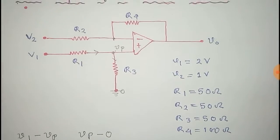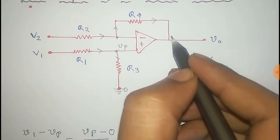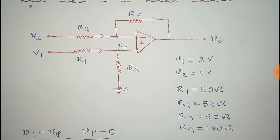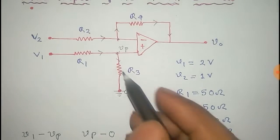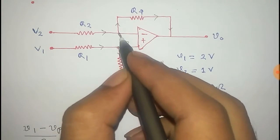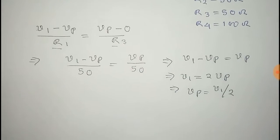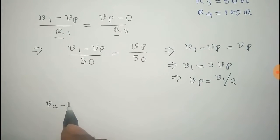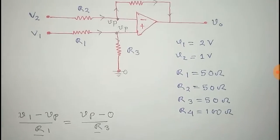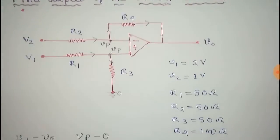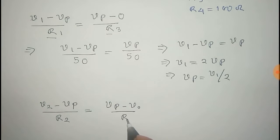Now consider this second loop. Again, there will be no current through the op-amp because the input impedance is high, so the current flows in this direction. The potential at the inverting terminal is also Vp, because these two points have the same potential — this is called virtual ground. For this loop: (V2 - Vp) / R2 = (Vp - V0) / R4.